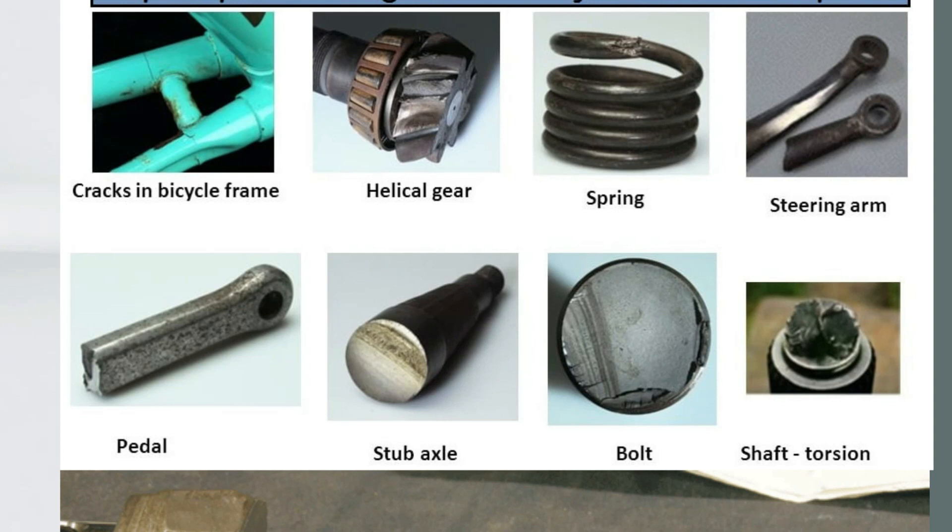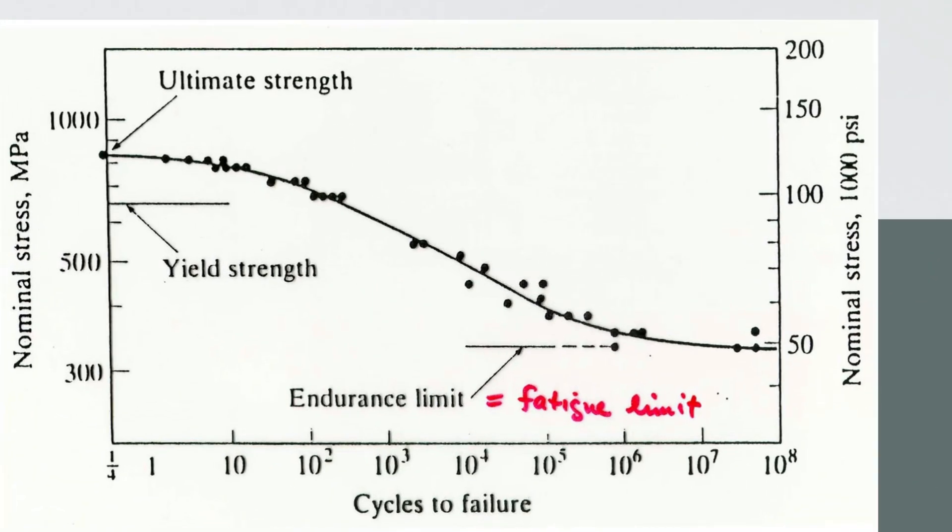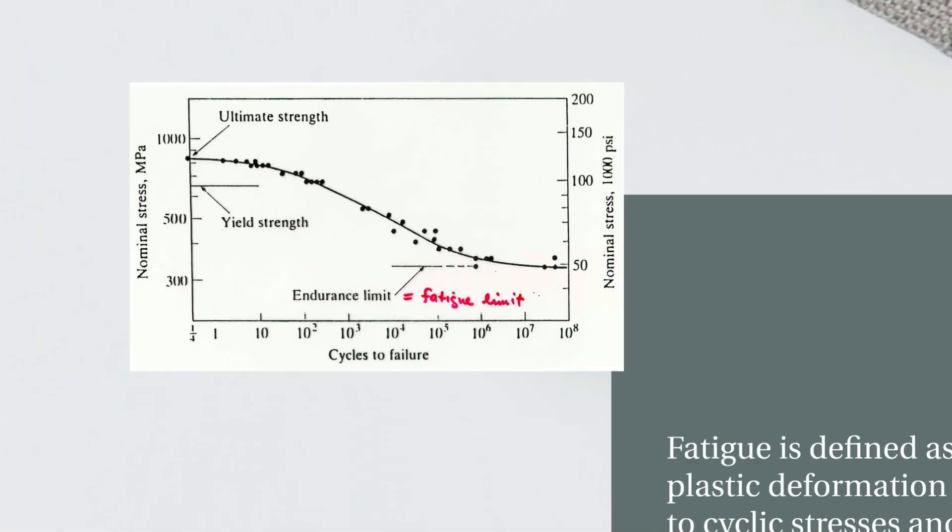It is important to consider the strength of a material when choosing one that undergoes cyclic loading — you should always choose a material with higher yield strength. This graph represents fatigue failure with respect to normal stress, where you can find the endurance limit or fatigue limit based on the number of cycles the material undergoes. This fatigue limit is important for identifying the stress acting on your material, and you must choose a material with higher strength than the fatigue limit.